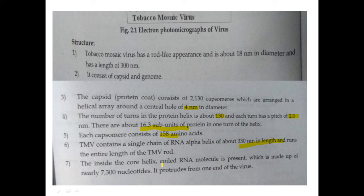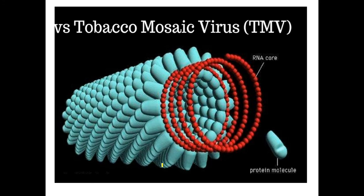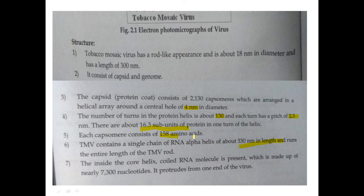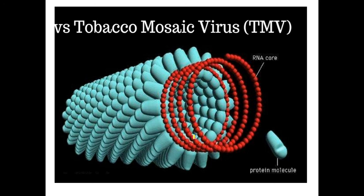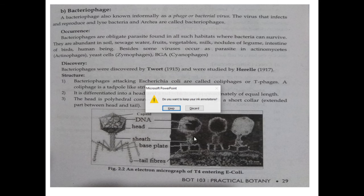The RNA molecule is made up of nearly 7300 nucleotides and protrudes from one end of the virus. This concludes our discussion of Tobacco Mosaic Virus. In the next video, we are going to discuss bacteria and various types of bacteria.